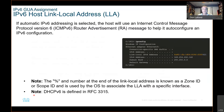The pound sign and the number at the end of the local link address is known as a zone ID or scope ID, and it is used for the operating system to allocate the LLA with a specific interface. DHCPv6 is defined in RFC 3315.